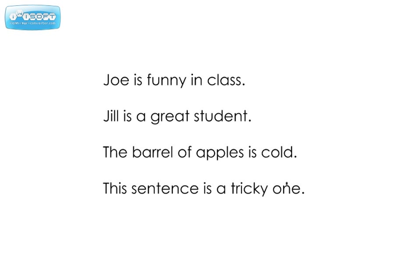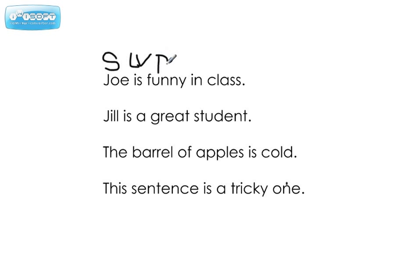Let's do some practice sentences. First: Joe is funny in class. Our linking verb is 'is' — always find the verb first. Who is? Joe. Joe is what? He's funny. Could you say 'the funny dog is very funny'? You sure can. Could you have 'a funny'? No, you can't. So that one's definitely going to be an adjective — a predicate adjective.